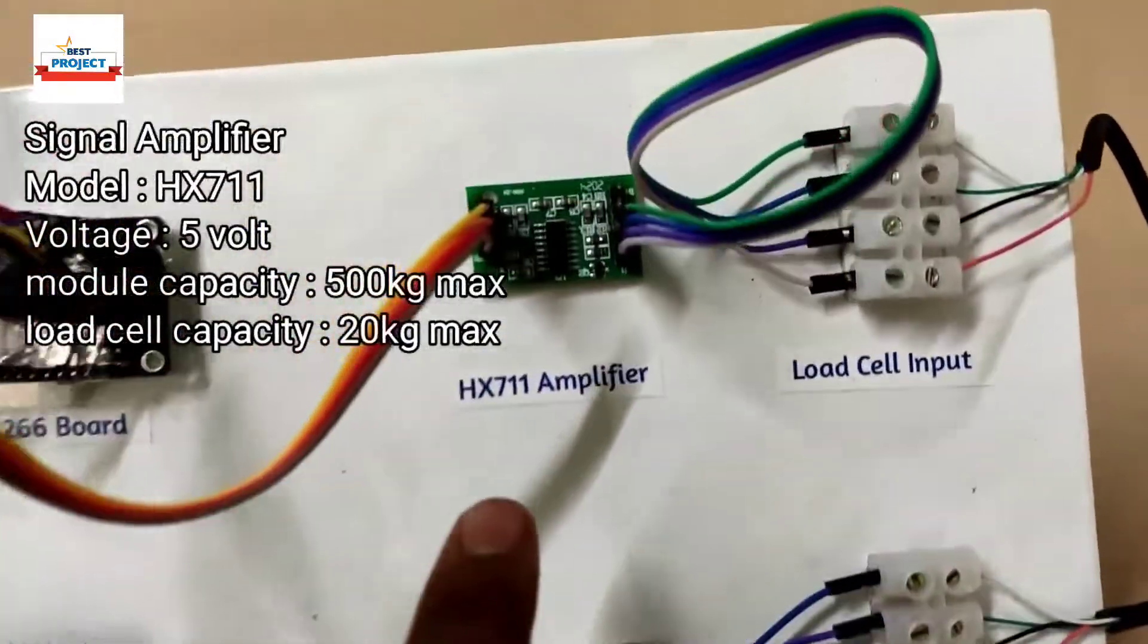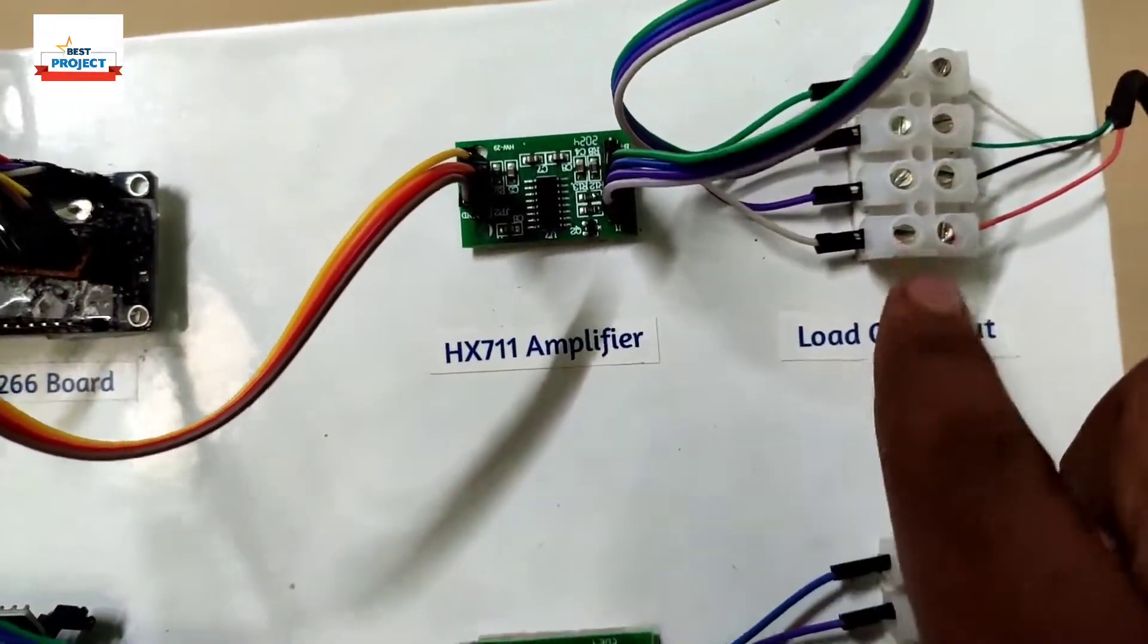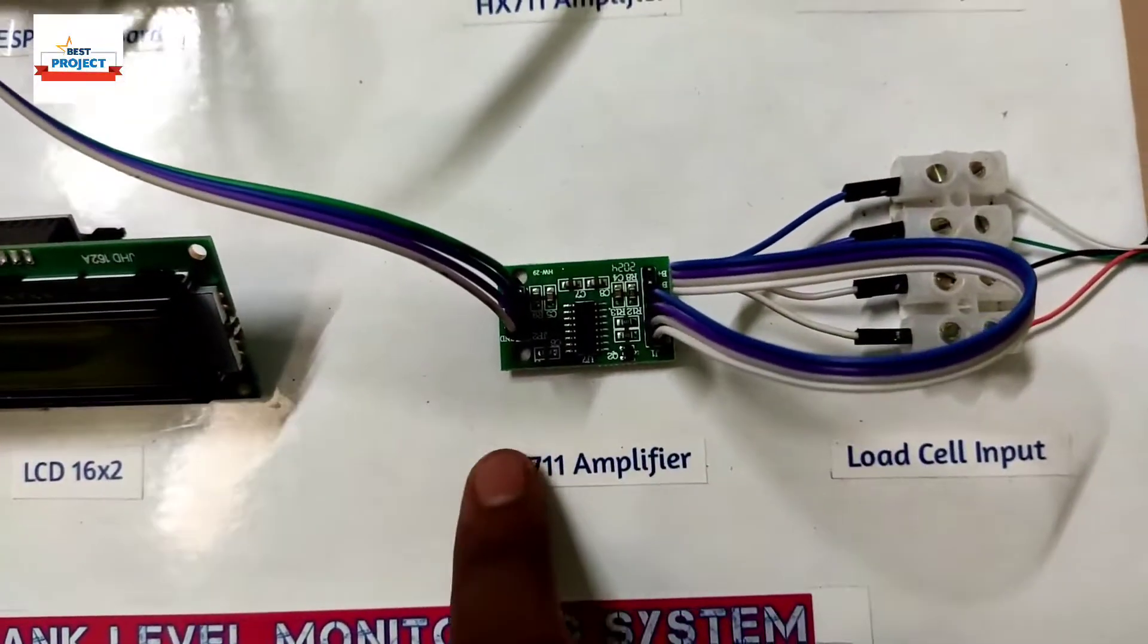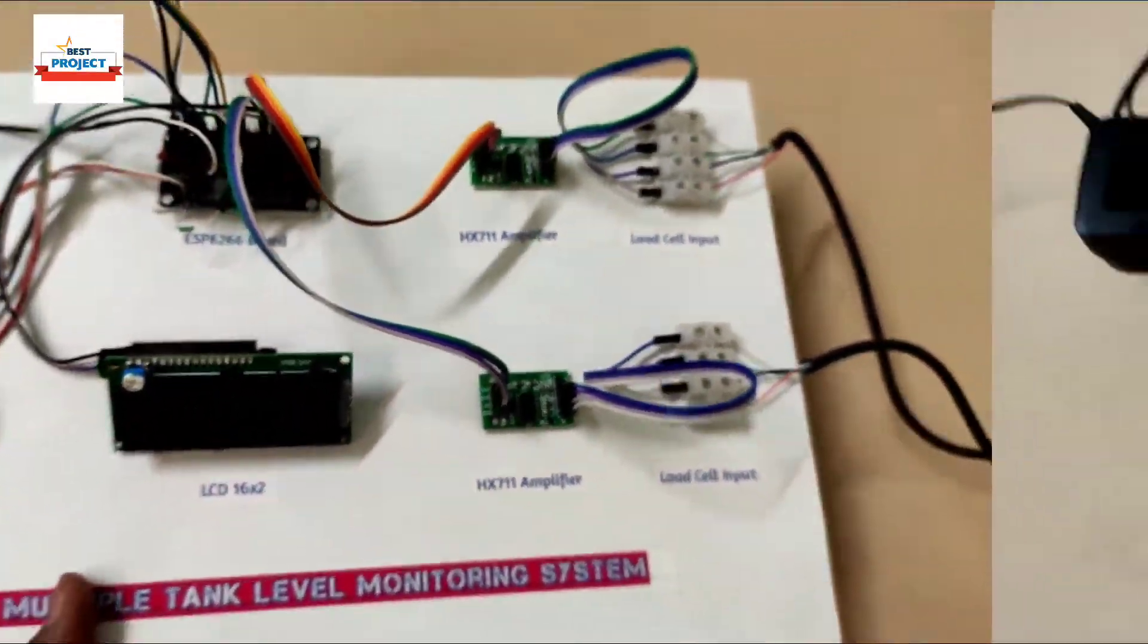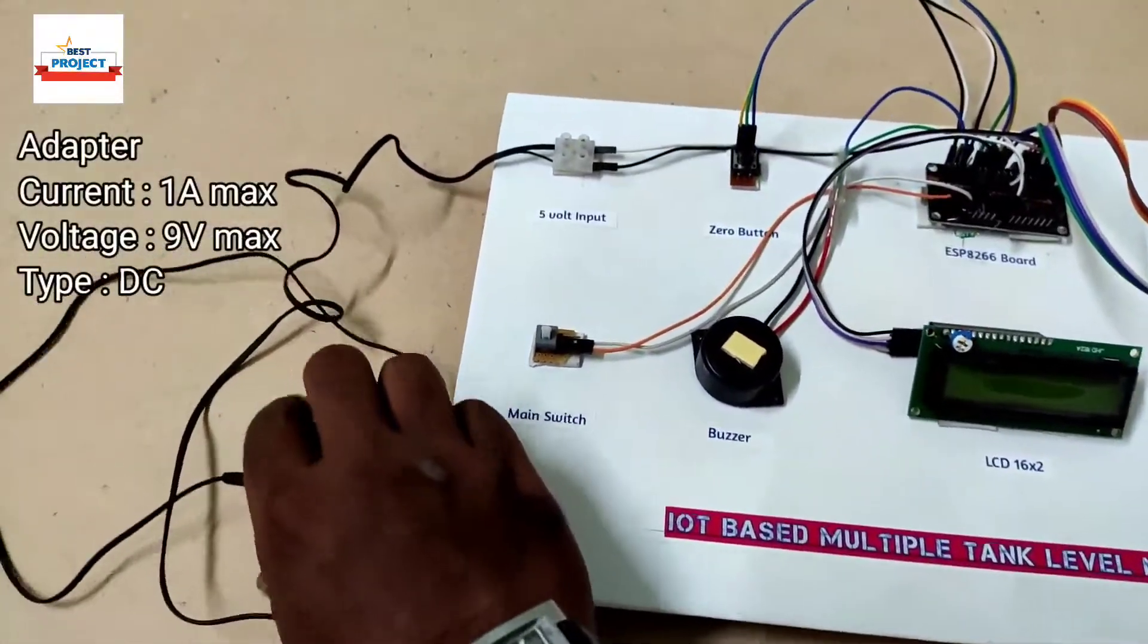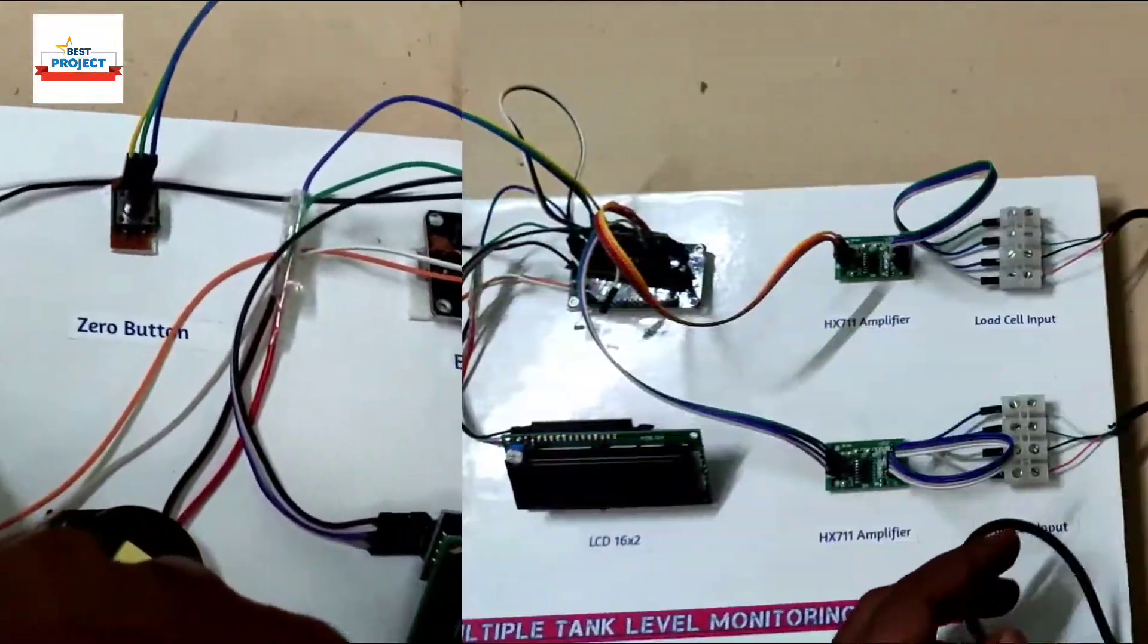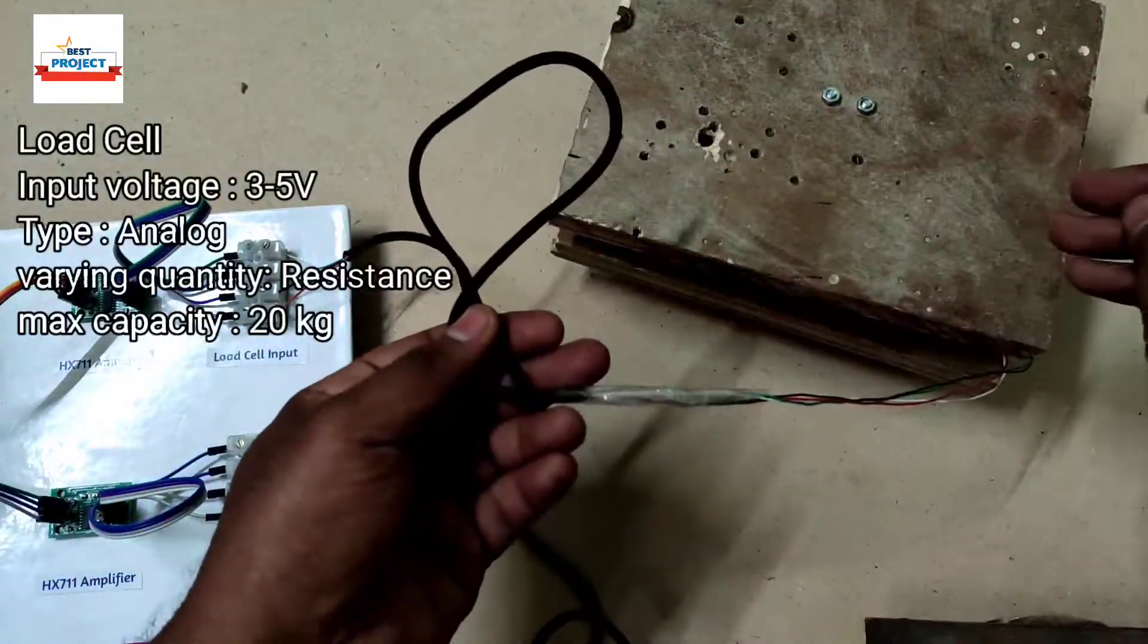It's actually an HX711 amplifier, which is compulsory when using a load cell because the load cell signal is very low. It amplifies the signal so our microcontroller can read it easily. The next component is a power adapter.